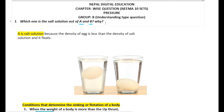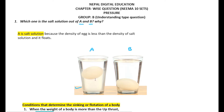So our problem is which one is the salt solution out of A and B. Obviously, A is the salt solution, because the density of the egg is less than the density of the salt solution, so the egg is floating in A. We know that the density of salt solution is more than the density of ordinary water, so the egg floats in A — therefore A is the salt solution.